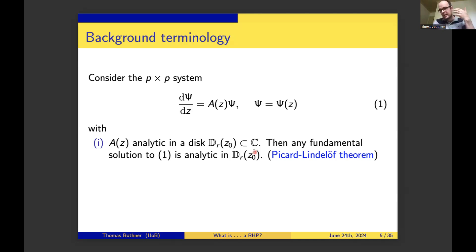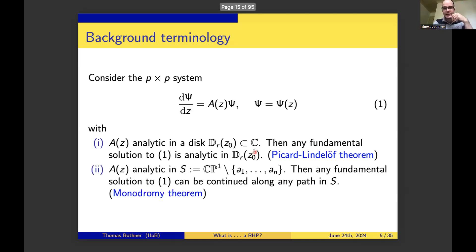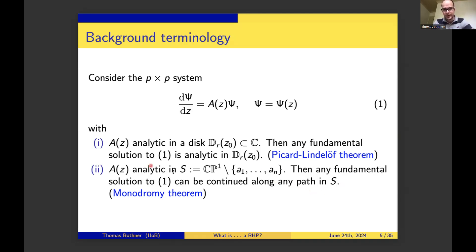However, we will be interested in differential equations with singularities. Necessarily, we have to move to the Riemann sphere with N punctures. The A_j are N distinct points. You enforce analyticity of the coefficient matrix away from those. Starting with a local fundamental solution, the monodromy theorem famously guarantees that you can continue any such fundamental solution along any path on the sphere with punctures, and the continuation depends only on the homotopy class of your path.